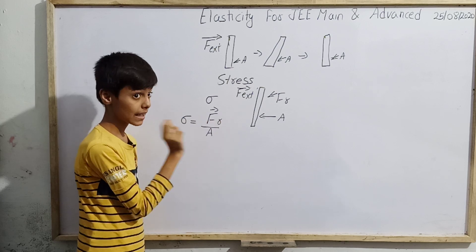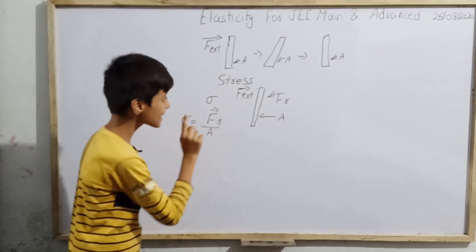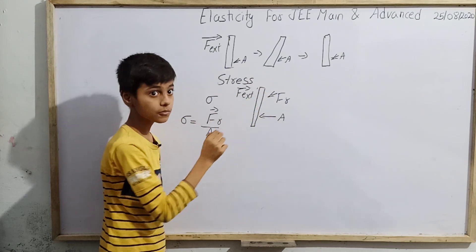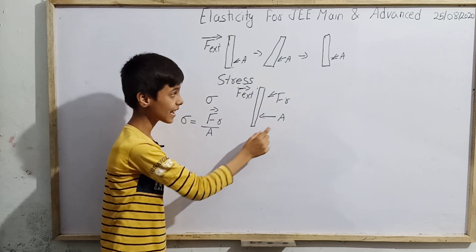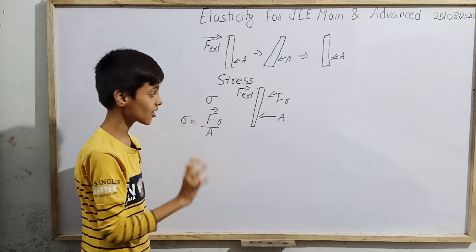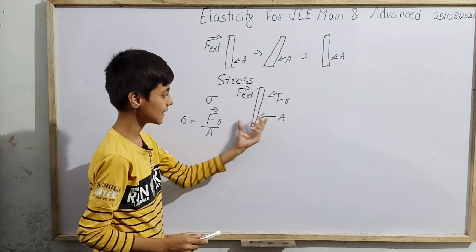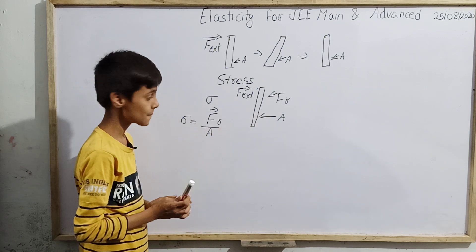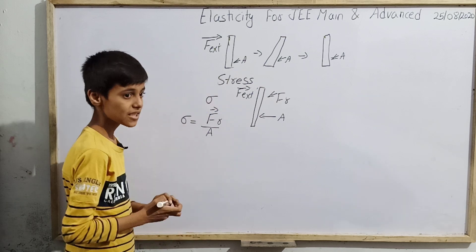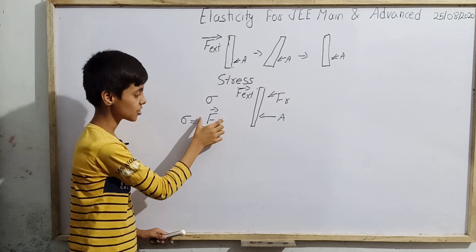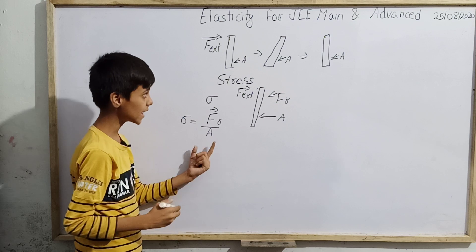Note that in the formula, we use the restoring force FR — not the external force acting on the metal plate. We also use only the cross-sectional area — only the area on which the restoring force acts — not the total area. So stress (sigma) is the ratio of restoring force divided by the cross-sectional area of the object.